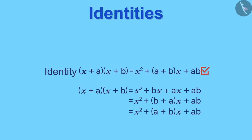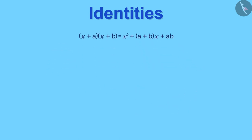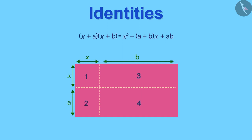Now, let us look at another way to prove this identity. For that, let us consider this rectangle and divide it in four parts as shown in the figure.